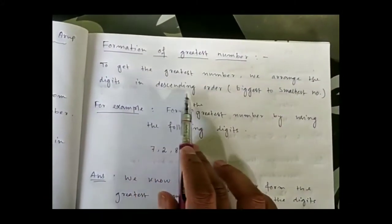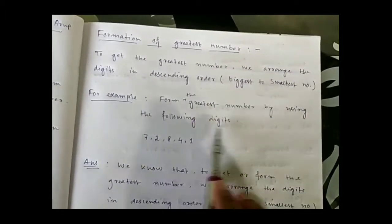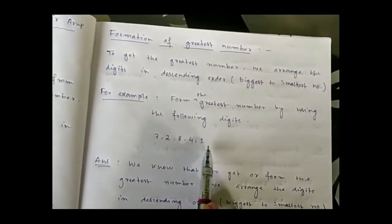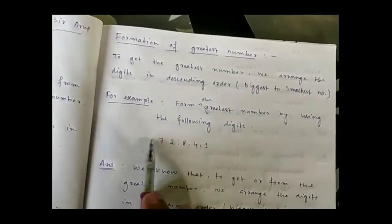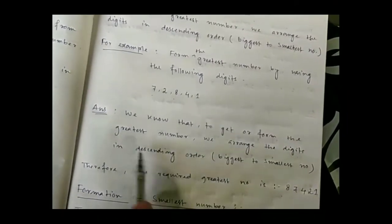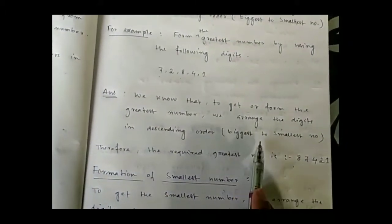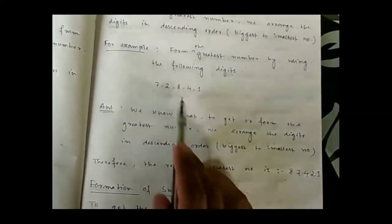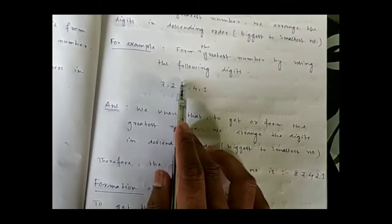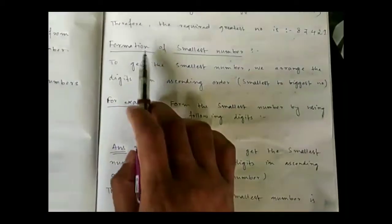Now, formation of greatest number: to get the greatest number, we arrange the digits in descending order, that is biggest to smallest. For example, to form the greatest number using given digits, the biggest digit is 8, after 8 the biggest digit is 7, after 7 is 4, after 4 is 2, after 2 is 1. So we arrange from biggest to smallest to get the greatest number.